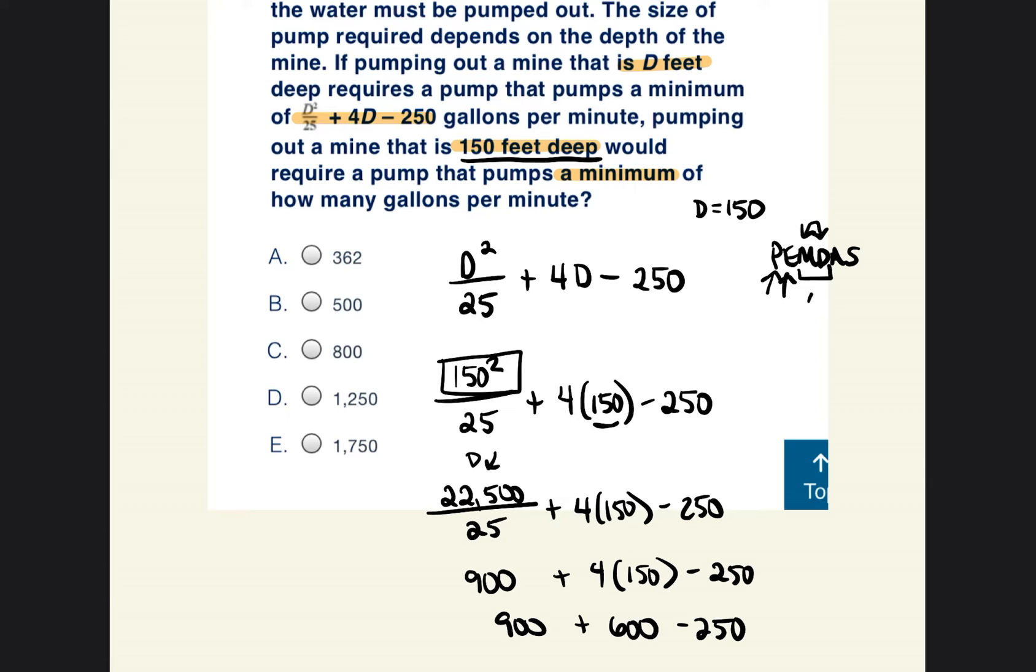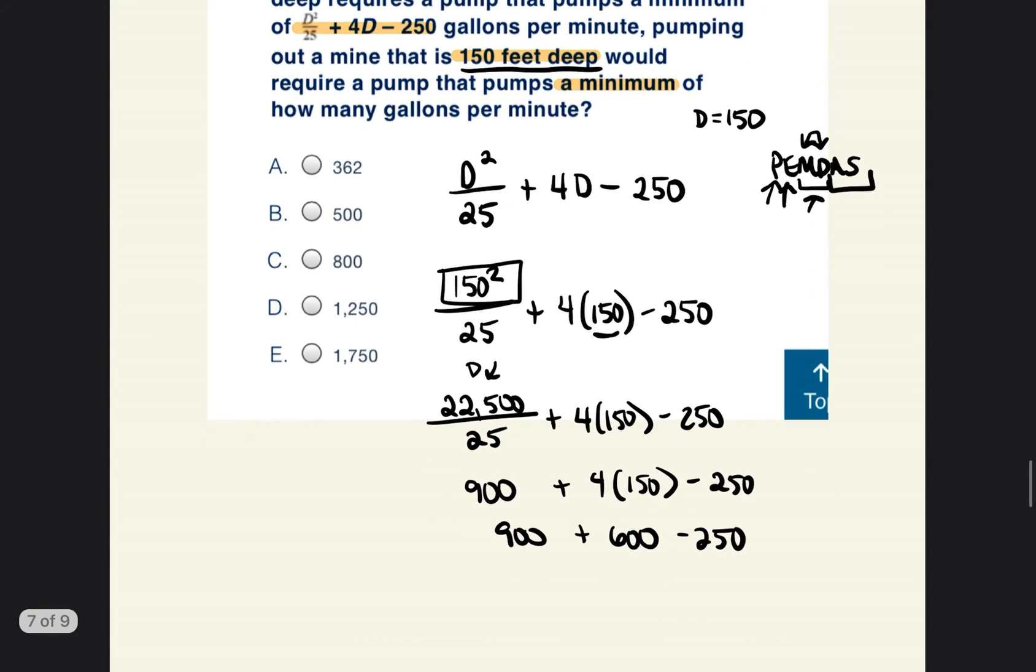So we multiplied and divided. Now we're going to add or subtract. Again, whichever one comes first. So 900 plus 600. The addition comes first. So we're going to do 1,500 minus 250. And that is going to be equal to 1,250. So again, we were trying to figure out what the answer would be. So it would be 1,250 gallons per minute. So our answer is D.